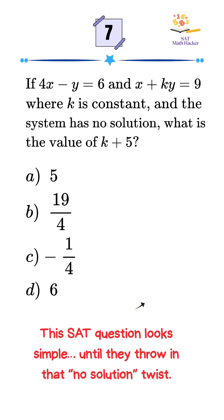This SAT math question asks: if 4x minus y equals 6 and x plus ky equals 9 and the system has no solution, what is the value of k plus 5?